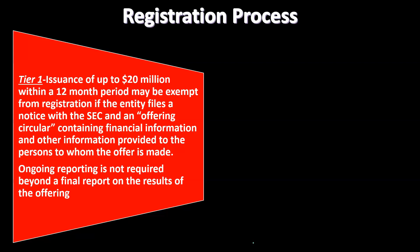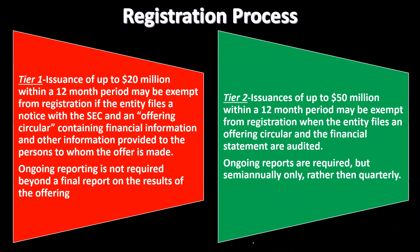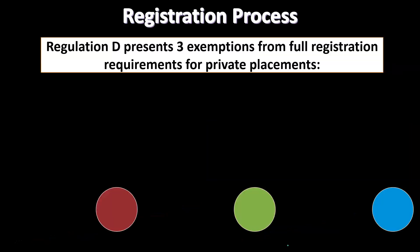Tier one issuance of up to $20 million within a 12-month period may be exempt from registration if the entity files a notice with the SEC and an offering circular containing financial information provided to the person to whom the offer is made. Ongoing reporting is not required beyond a final report on the result of the offering. Tier two is an issuance of up to $50 million within a 12-month period, exempt when the entity files an offering circular and the financial statements are audited. Ongoing reports are required, but only semi-annually rather than on a quarterly basis.